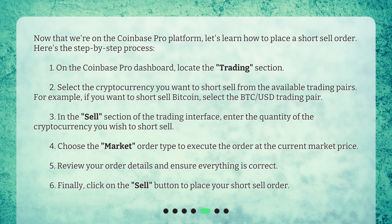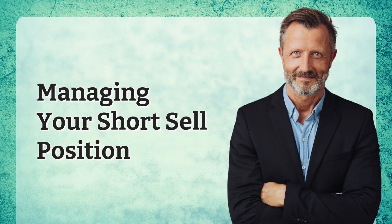For example, if you want to short sell Bitcoin, select the BTC/USD trading pair. Three, in the Sell section of the trading interface, enter the quantity of the cryptocurrency you wish to short sell. Four, choose the Market order type to execute the order at the current market price. Five, review your order details and ensure everything is correct. Six, finally, click on the Sell button to place your short sell order.